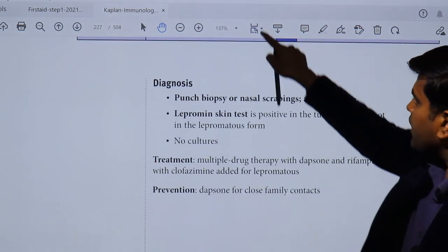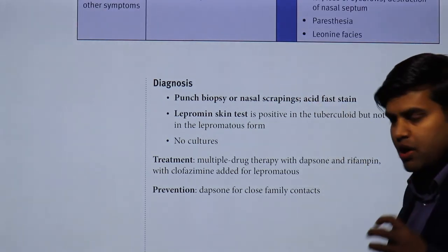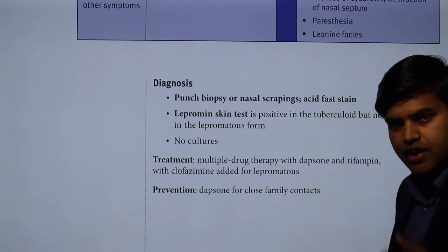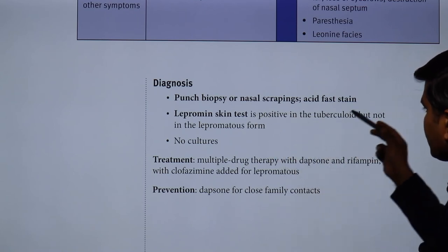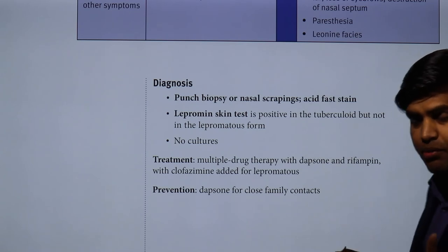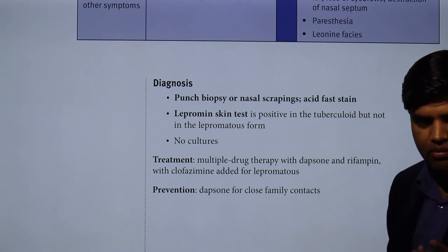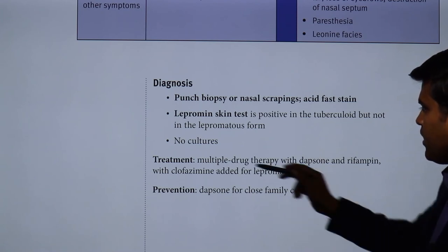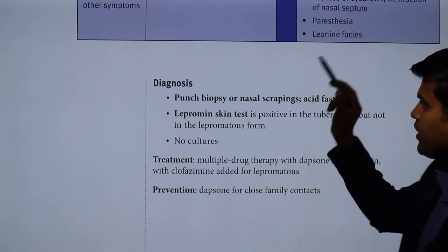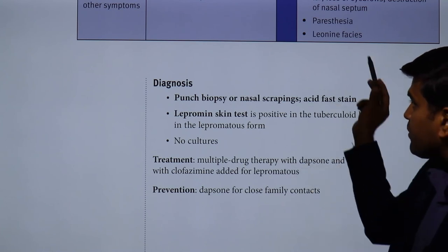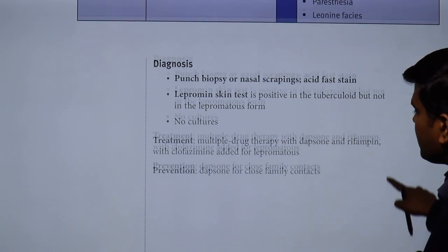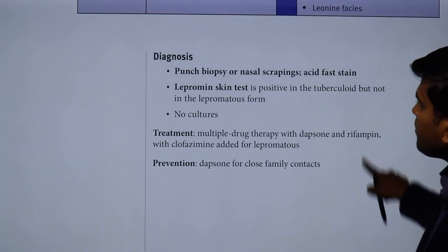For diagnosis, a punch biopsy or nasal scraping detects acid-fast bacilli. The lepromin skin test is positive in the initial tuberculoid stage but not in the lepromatous form. There is no routine culture; for experimental purposes, culture can be done in armadillos or mouse foot pads. Treatment uses multiple drug therapy: dapsone and rifampicin for tuberculoid, with clofazimine added for lepromatous leprosy. Dapsone is also used as prophylaxis for close contacts.